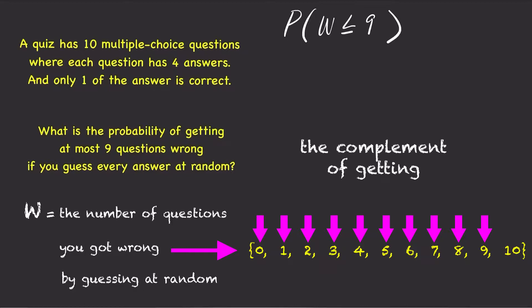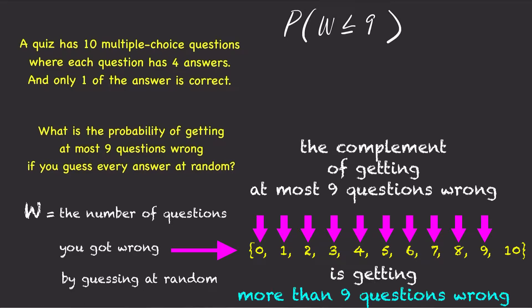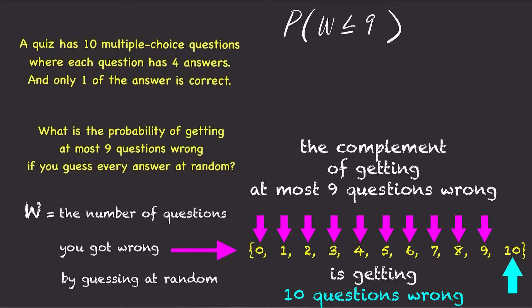The complement of getting at most 9 questions wrong is getting more than 9 questions wrong, which is getting 10 questions wrong. So, p of w less than or equal to 9 is 1 minus p of w equals 10.